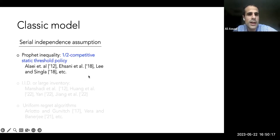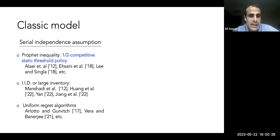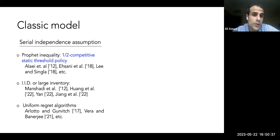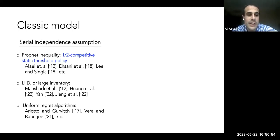If you want to beat one-half competitiveness, that's feasible but requires a simpler problem: assuming demand is IID, stationary, or that you have large inventory. In that case you can improve beyond one-half and get near-optimality results. As inventory grows, you can converge back to the hindsight optimal at a rate of one over square root K, where K is inventory.